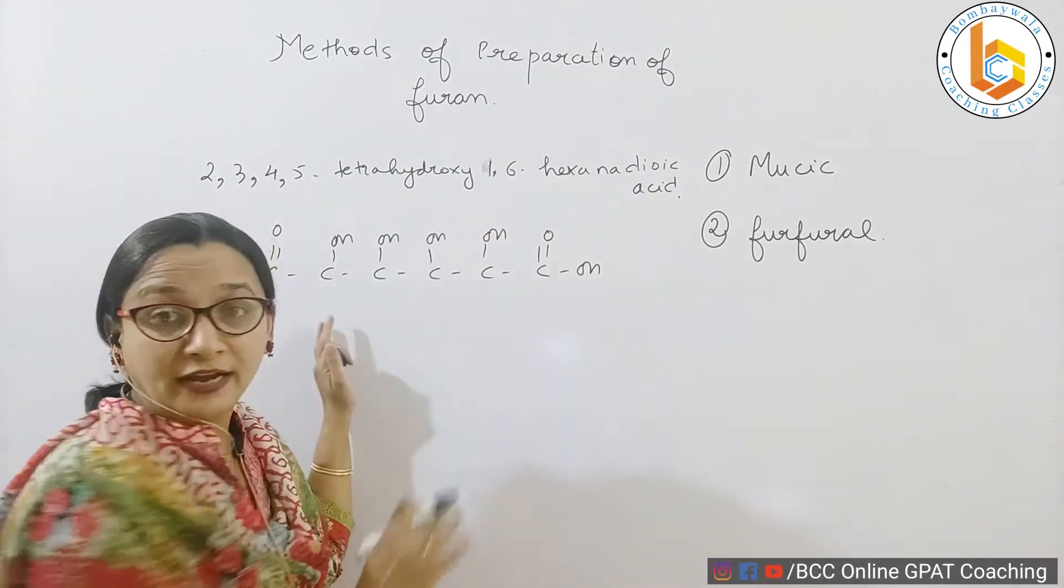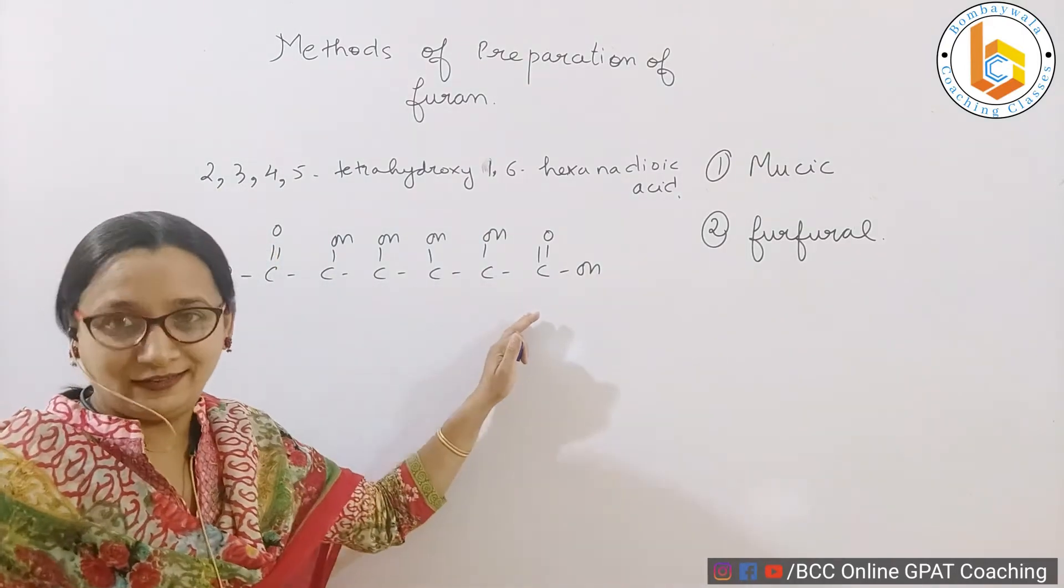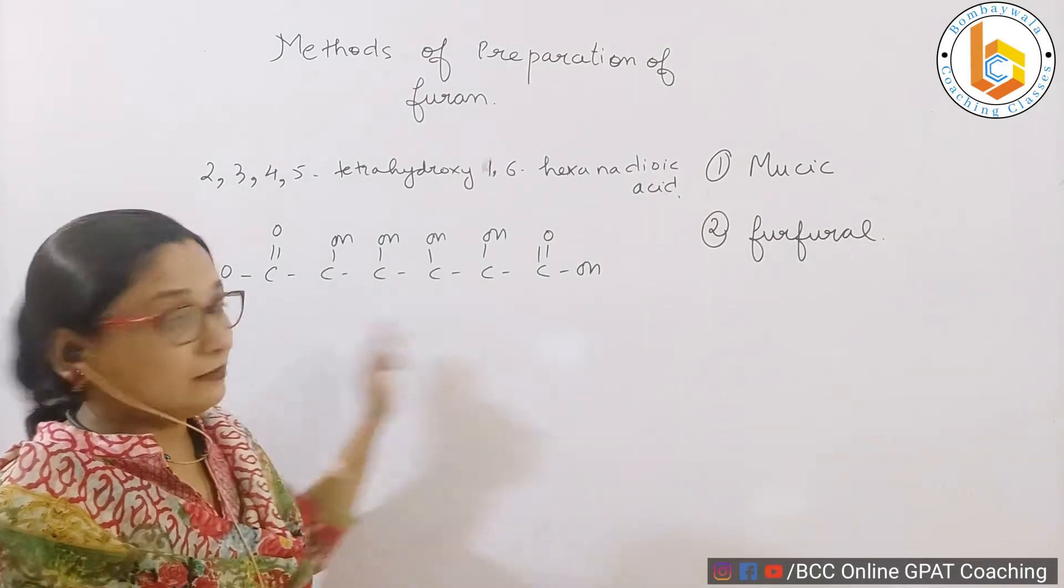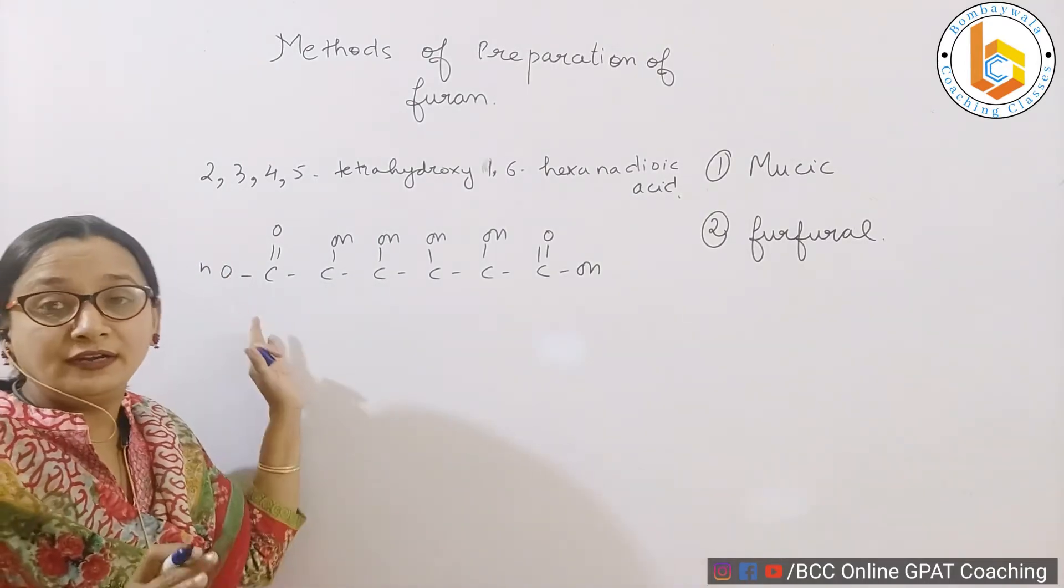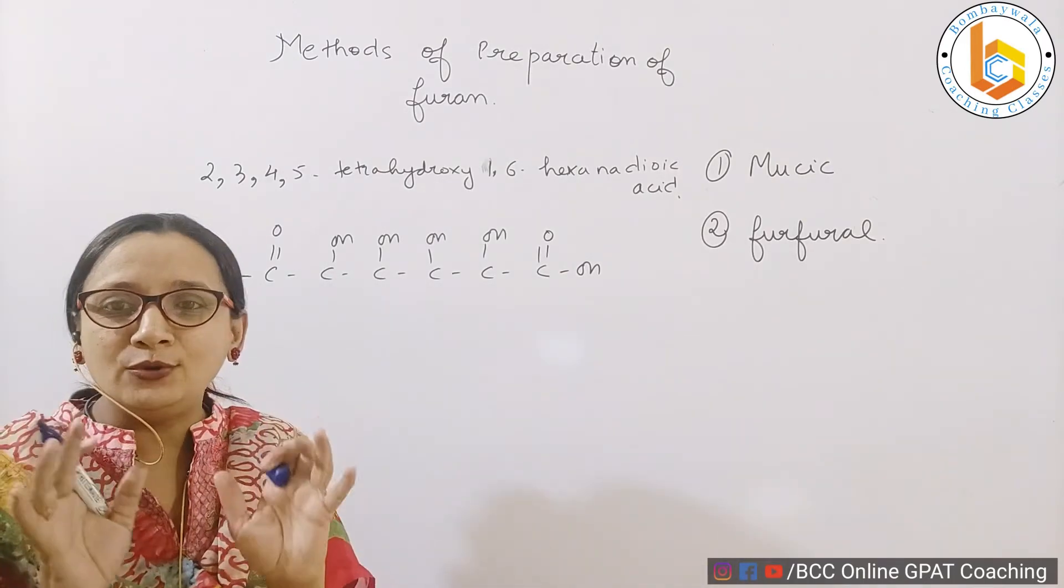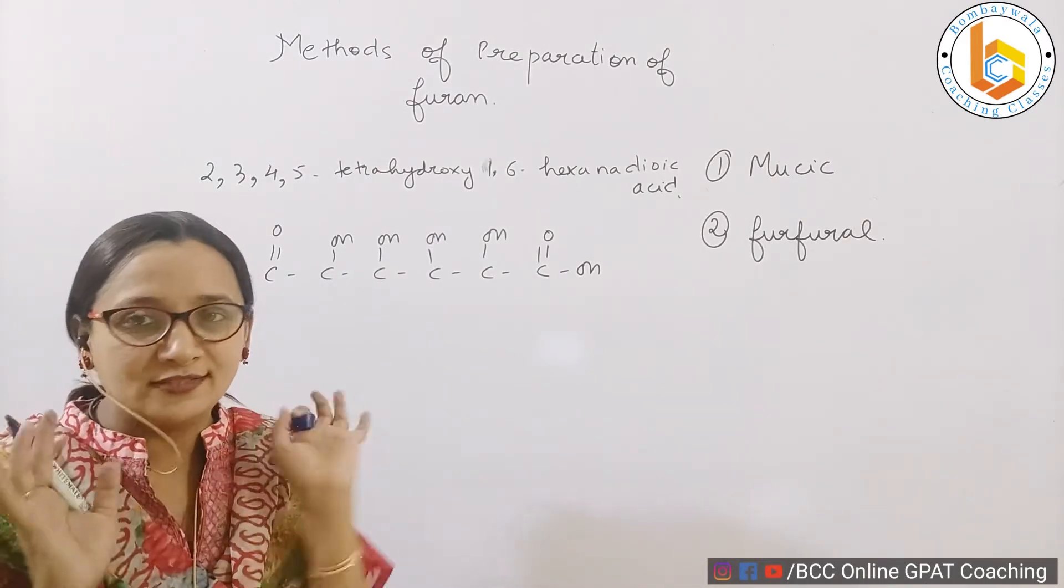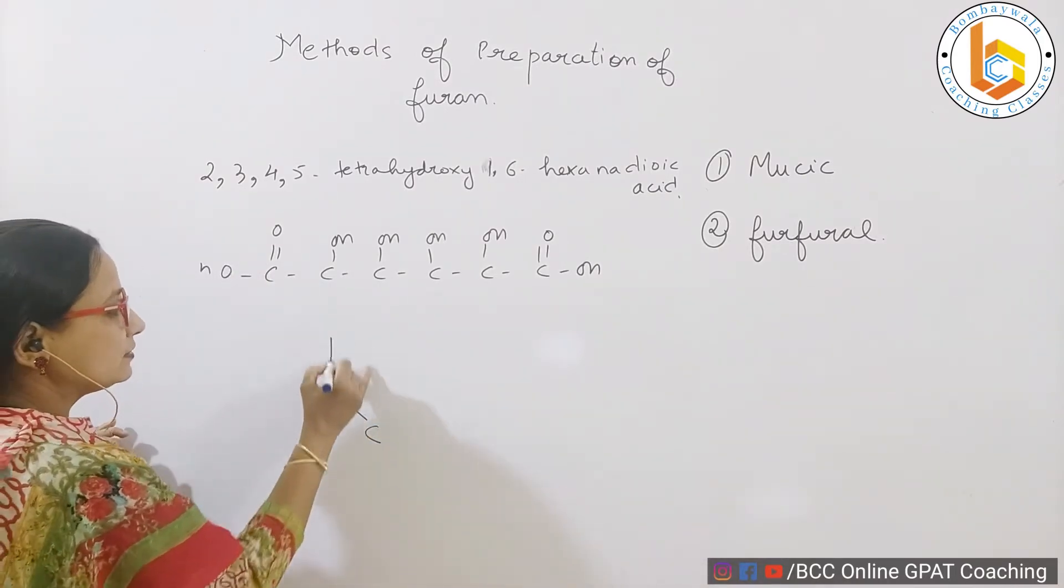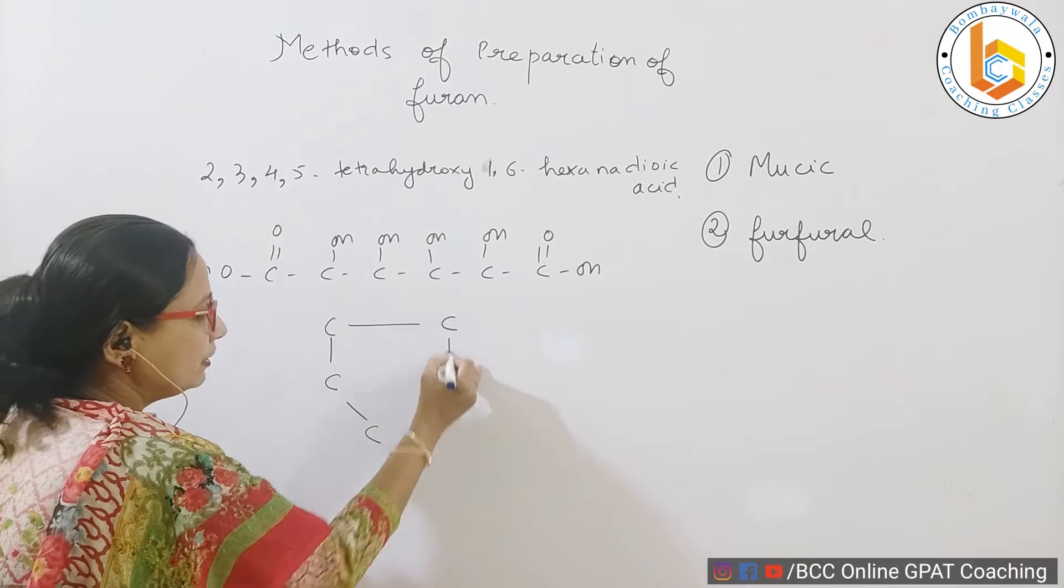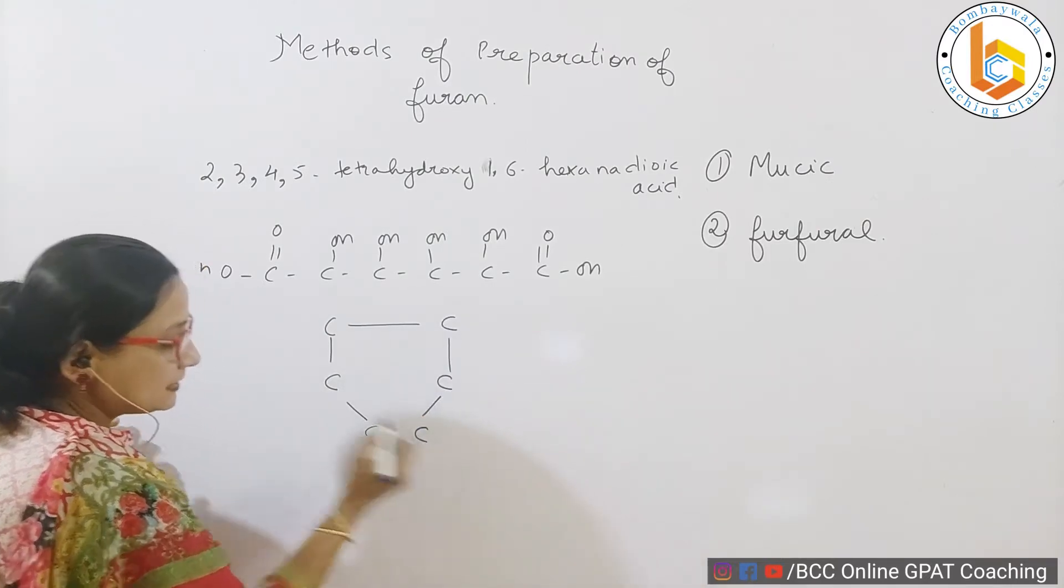One, six hexane dioic acid. Now let me tell you an easy way to write this structure, okay. See, this is my one, this is my two, this is my three, this is my four, this is my five, this is my six.